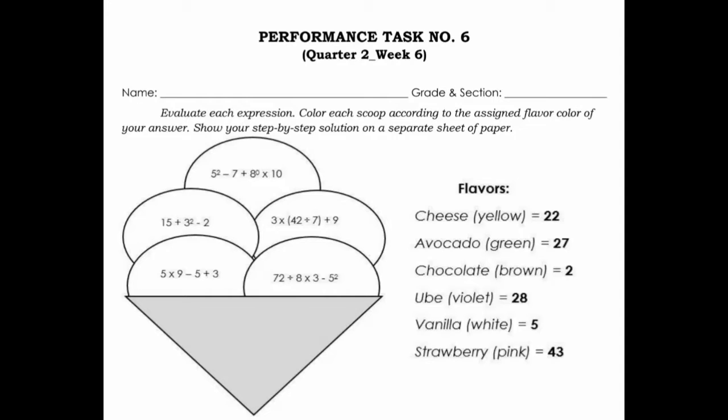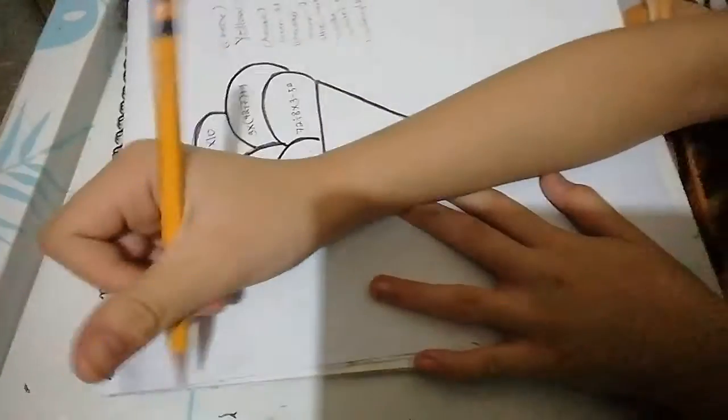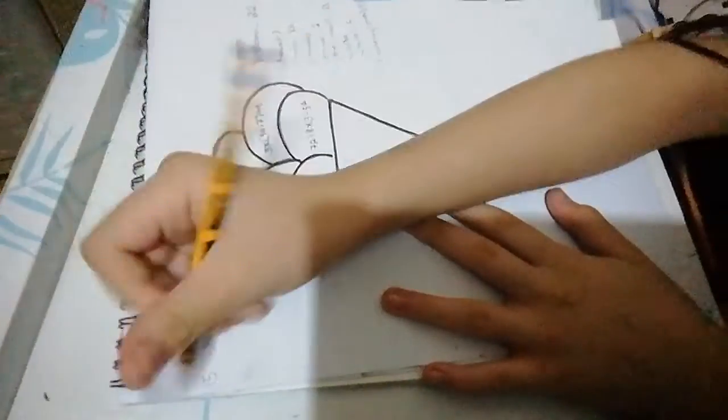Evaluate each expression, color each scoop according to the assigned flavor color of your answer. Show your step-by-step solution on a separate sheet of paper. Flavors: Cheese yellow equals 22, Avocado green equals 27, Chocolate brown equals 2, Ube violet equals 28, Vanilla white equals 5, Strawberry pink equals 43.